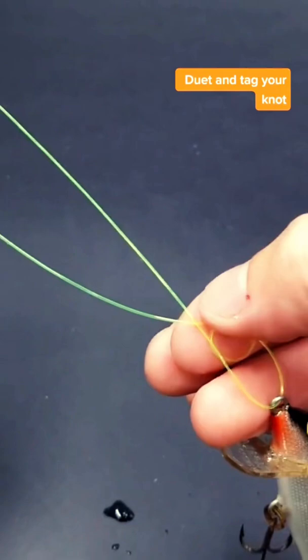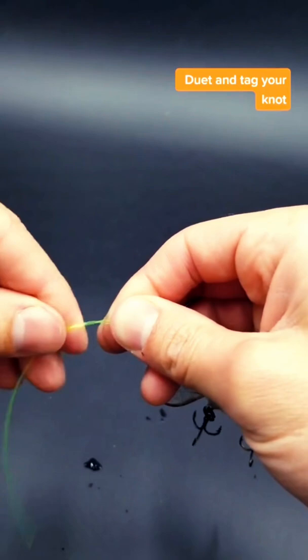Take your tag end and wrap it around three times. You can go more if it's a smaller diameter line. Let's do this many.